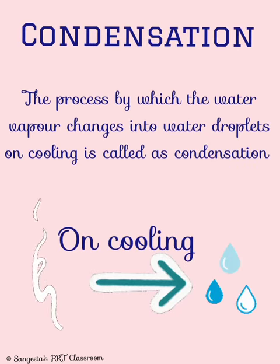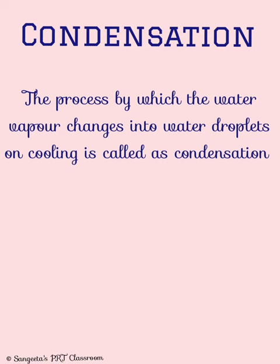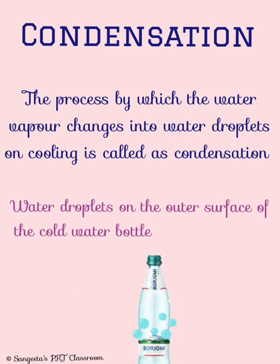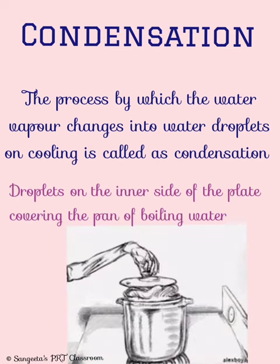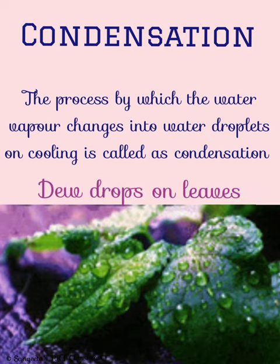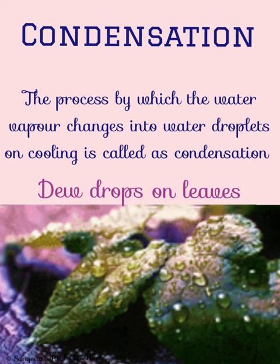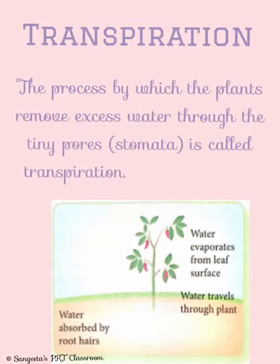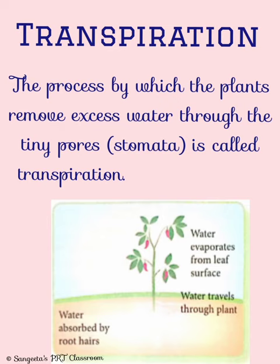The process by which water vapour changes into water droplets on cooling is called condensation — like water droplets formed on the outer surface of a cold water bottle taken from the fridge, water droplets on the inner side of a plate put on a pan of boiling water, and dew drops on leaves in winter. The process by which plants remove excess water through tiny pores called stomata on the surface of leaves is called transpiration, which is essentially evaporation of water from plant leaves.